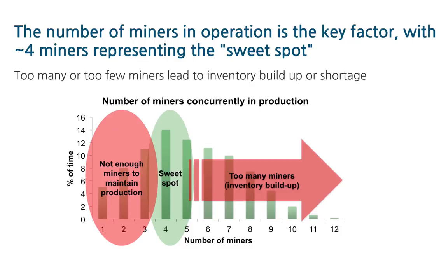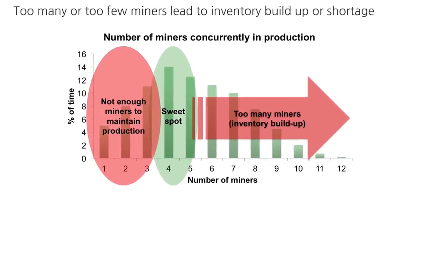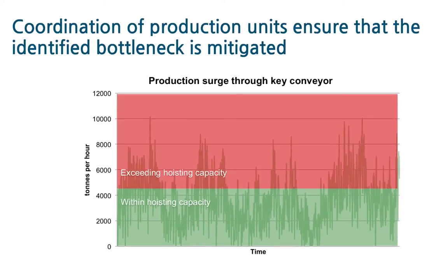We will look at some of the key outcomes from this study. Firstly, we are able to accurately identify the number of miners that represent the sweet spot for operating. Too many miners in operation lead to inventory buildup, and too few miners lead to starving the process plant. Identifying the optimal number of miners ensures the system is operating at a sustainable rate. Secondly, the model provides a detailed view of the dynamic system components working together. We are able to look at key conveyor units and review production surge through that conveyor. With downstream capacity limitations, we analyze different coordination strategies between deployed production units and the effective flow rate exceeding the downstream capacity, providing a means for optimizing the production strategy and the physical belt sizing.